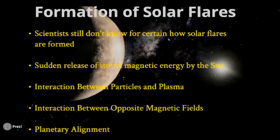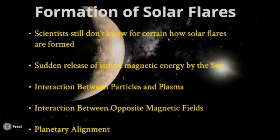And finally, some scientists believe that it's about planetary alignment. They believe that solar flares are directly connected to planetary alignment, and that once the planets lose alignment, the sun's activities return to normal. But nevertheless, all these are just theories.